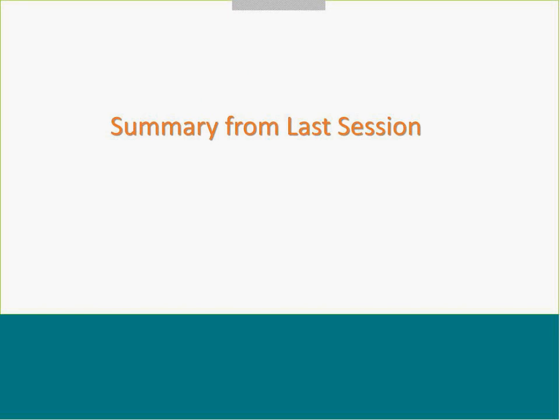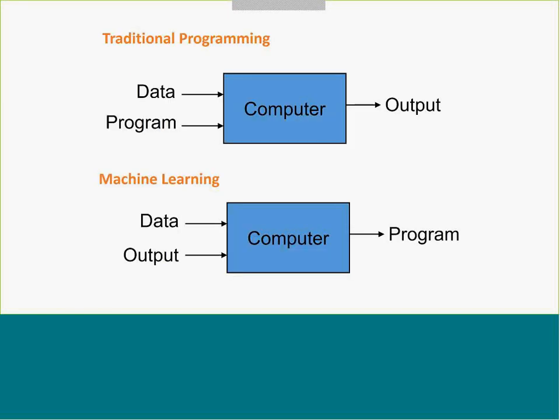In the next 4 to 5 minutes, I'm going to cover the summary for the last session. In traditional programming, what typically happens is we provide data and a program to our computer and get the output we need. But in machine learning, the output is the program, and the input is data along with the objective of that particular data.